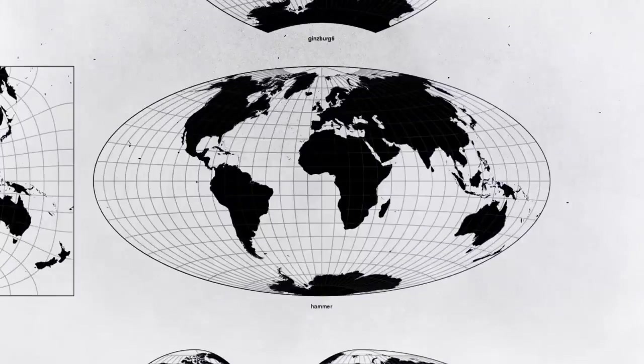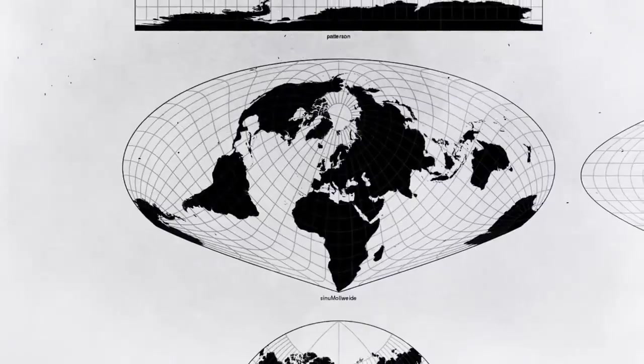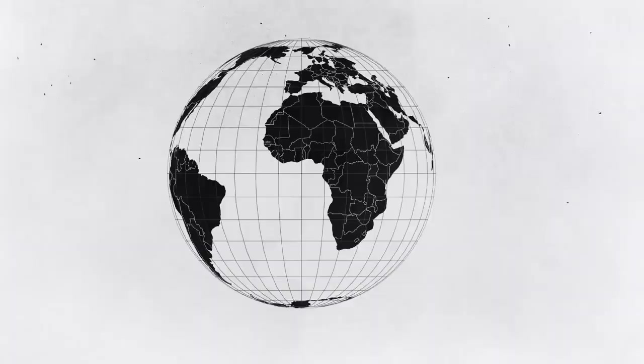And here's the big problem. Every one of these projections comes with trade-offs in shape, distance, direction, and land area. Certain map projections can either be misleading or very helpful depending on what you're using them for.